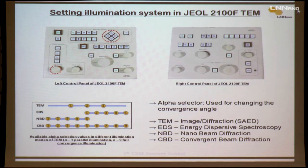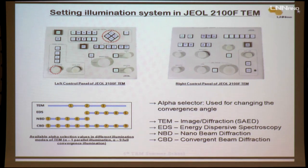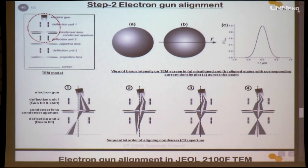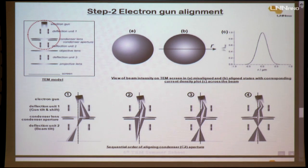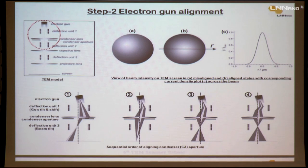The next step of alignment is the electron gun alignment. For a LaB6 machine, when you take a beam profile, it needs to be centered with high intensity. For the FEG machine, the process is slightly different. The gun is tilted and the beam is shifted — we correct using deflection units 1 and 2 (gun tilt and gun shift). For the FEG machine, we need to center the anode wobbler and maximize the beam intensity. For the LaB6 machine, we try to get maximum intensity of the electron beam.